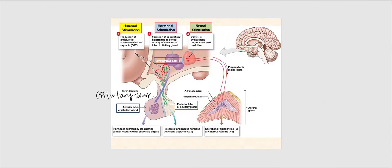This image shows how the hypothalamus links the nervous system and the endocrine system. Humoral stimulation involves the hypothalamus and the posterior pituitary: the neurosecretory or neuroendocrine cells found in the hypothalamus release ADH, antidiuretic hormone, and oxytocin. The entire highlighted region in green is the hypothalamus.